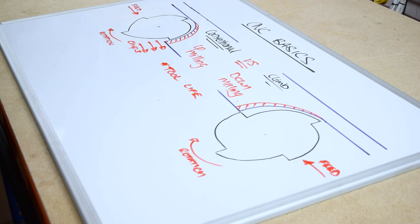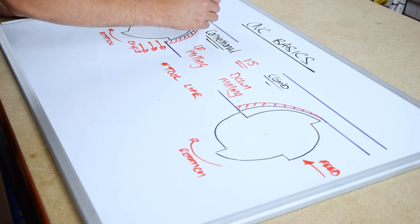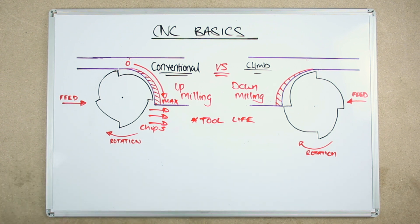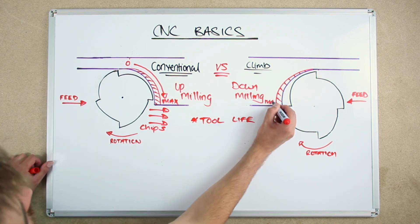The cut direction affects how the chips are cut. In conventional milling, the chip is cut starting at zero width, building up to the maximum width. Climb milling is the opposite. At the start of each cut, it is cutting the maximum width going down to zero width.